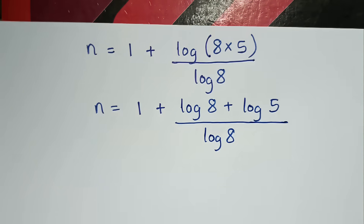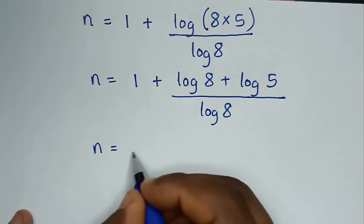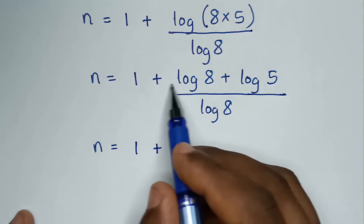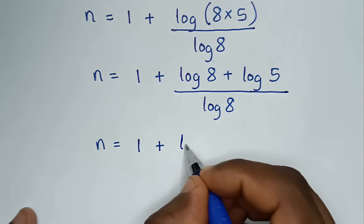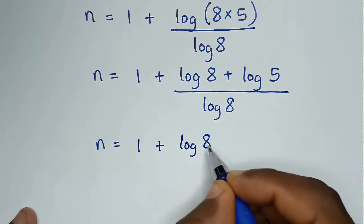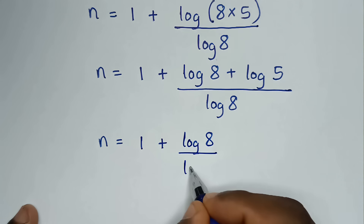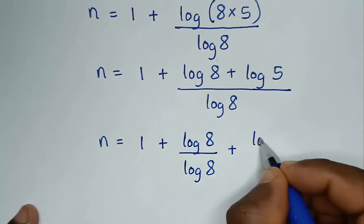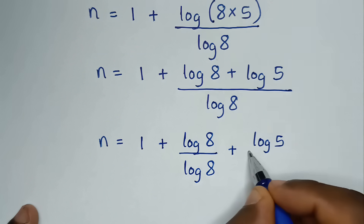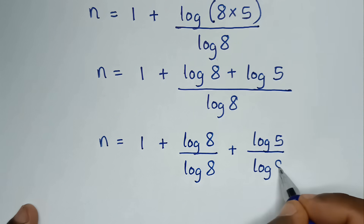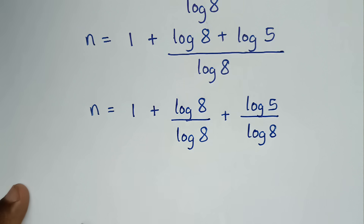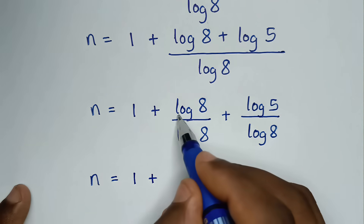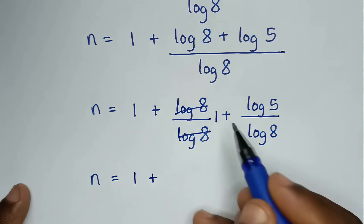Then in the next step, it will be n is equal to 1 plus — here we'll divide by log of 8 in each part — so log of 8 over log of 8, plus log of 5 over log of 8. Since log of 8 divided by log of 8 is 1, it will be 1 plus 1 plus log of 5 over log of 8.